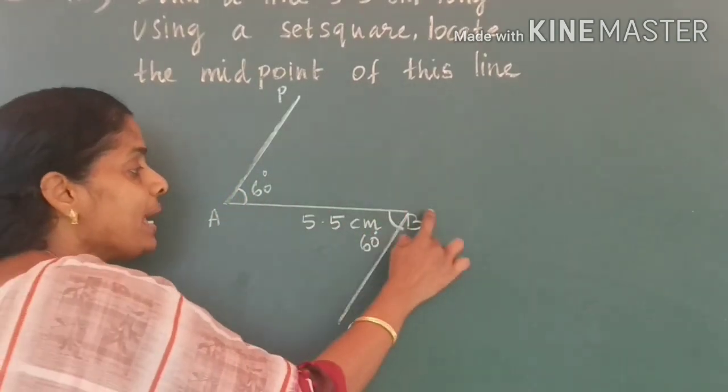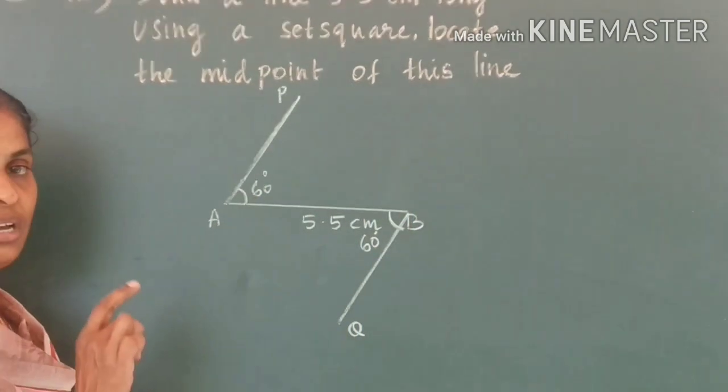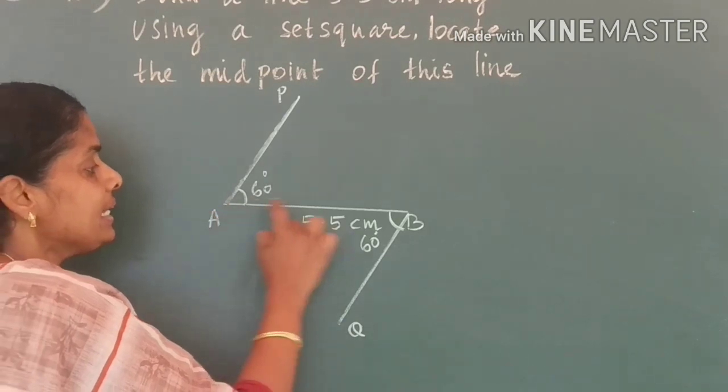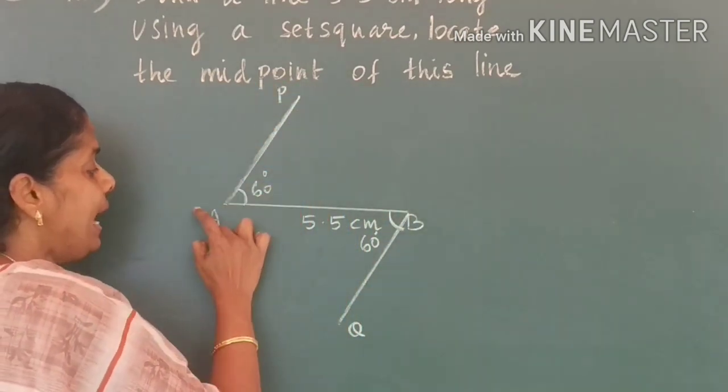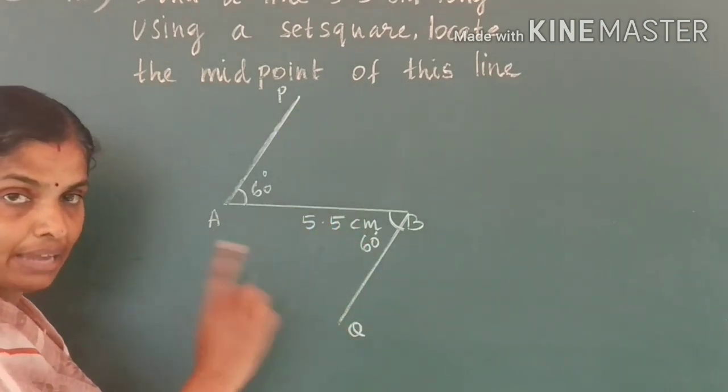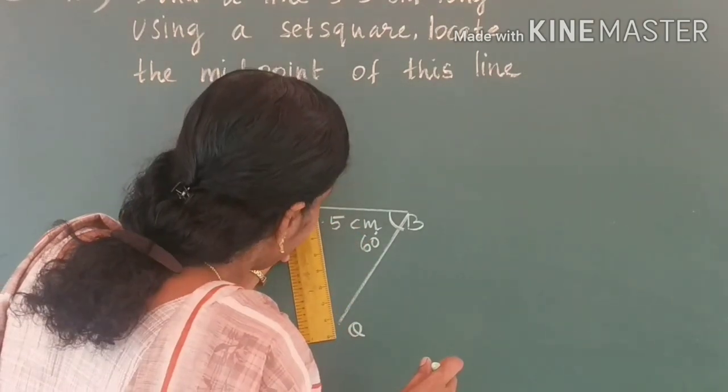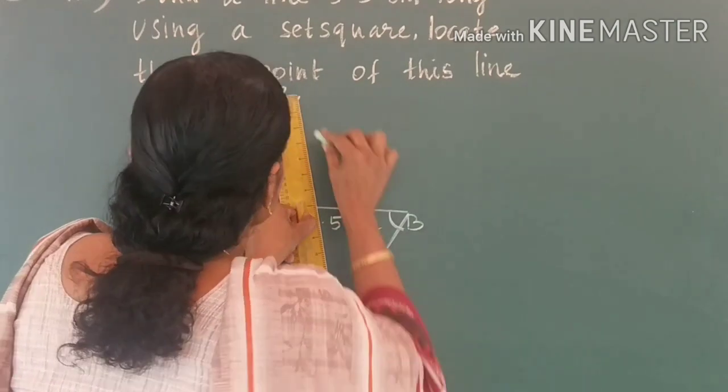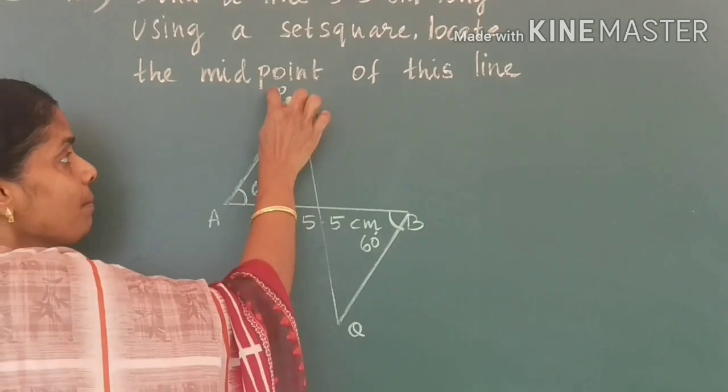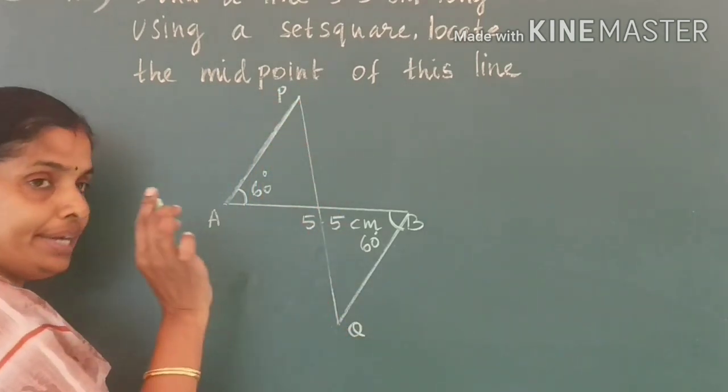And AB is the common side. So, what can you say about the triangles ABP and ABQ after joining? I will tell you, join P to Q. I have joined PQ.